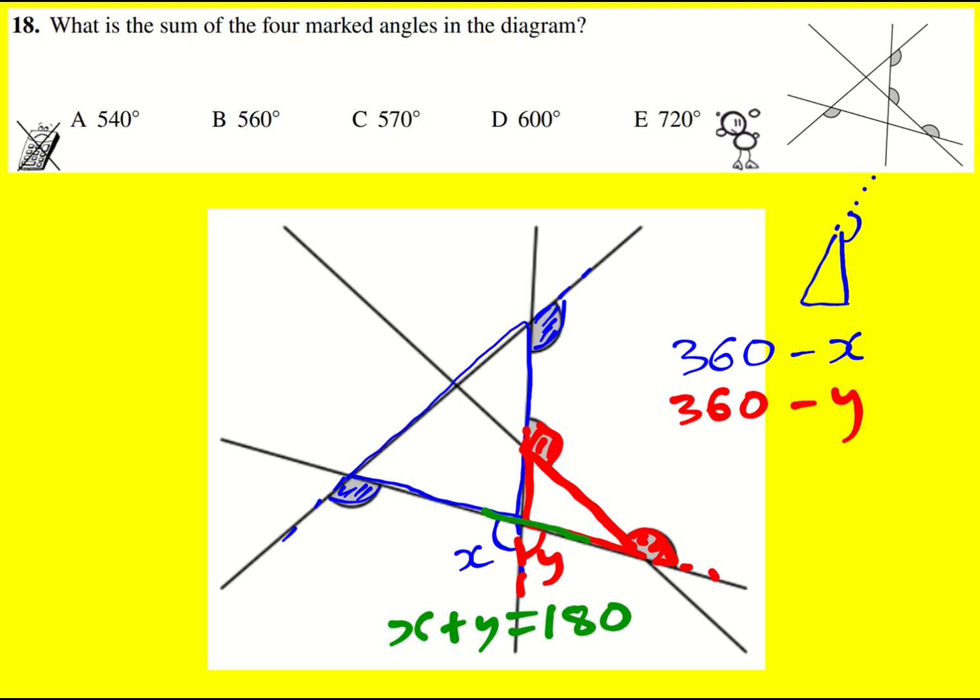So the answer to this question is going to be 360 plus 360 minus x minus y or minus x plus y, which is the same as minusing 180. If I do 360 minus 180, I get 180. So it's 360 plus 180 overall, which gives an answer of 540.